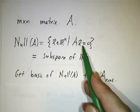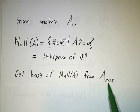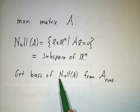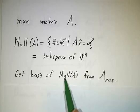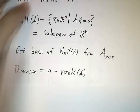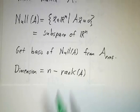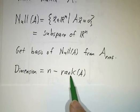Once you figure out the reduced row echelon form of A, you can just read off all the solutions. You can read off a basis for the null space. And the dimension of the null space is n minus the rank of A, because that's how many free variables you have.